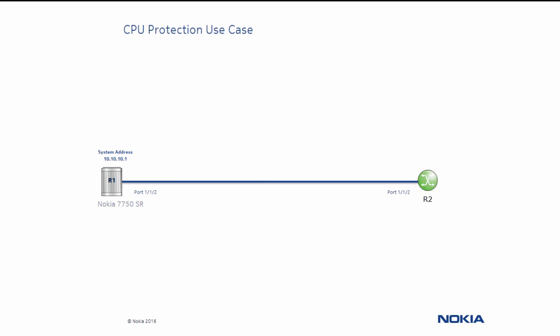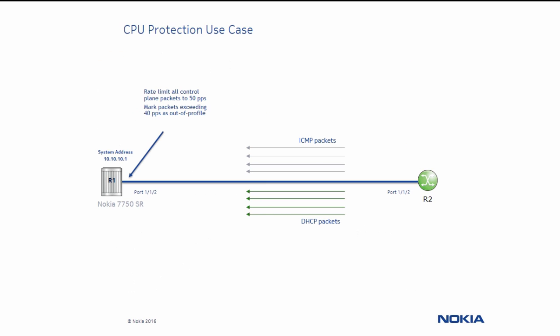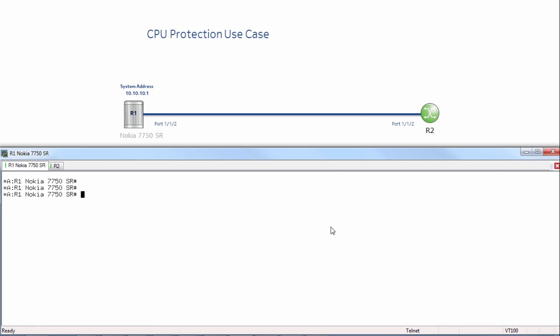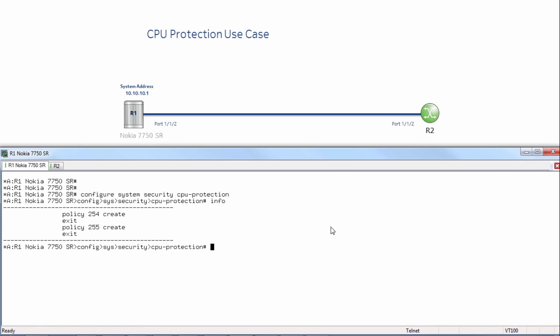This is a CPU protection use case. We want to rate limit control traffic to an overall rate of 50 packets per second, and mark any control plane packets that exceed 40 packets per second as out of profile. Let's begin the exercise. First thing I want to do is configure system security CPU protection, and I'll do an info.